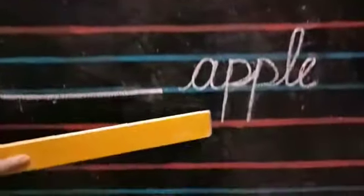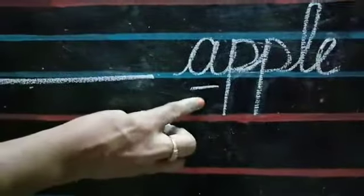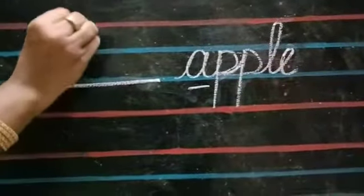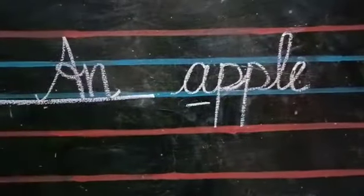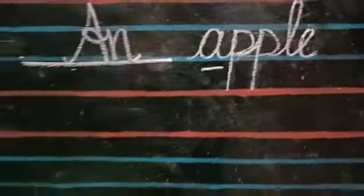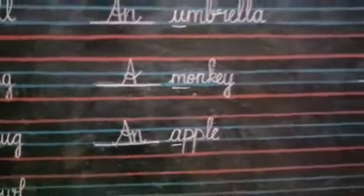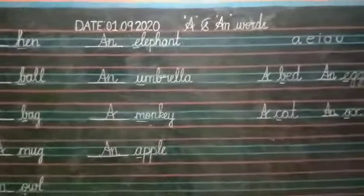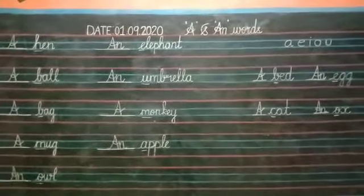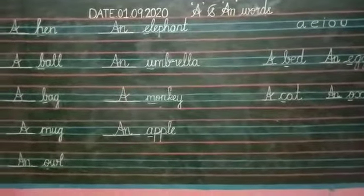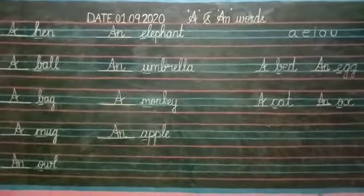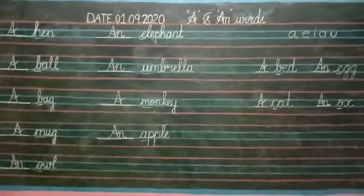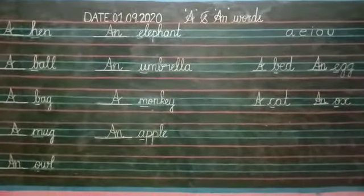Now, last word, children. A, P, P, L, E — Apple. Check the first letter, children. Is A a vowel? Yes. So, if the first letter of the word is a vowel, write AN. AN, Apple. Children, I hope you all understood when to use A or AN. Check the first letter of the word, then you can know whether to use A or AN. Now, open your English notebook and write A and AN words correctly. Thank you, children.